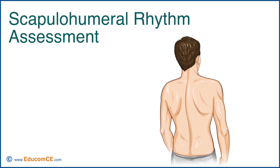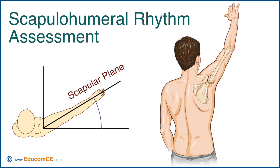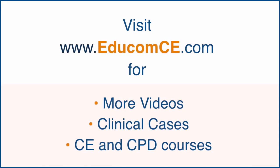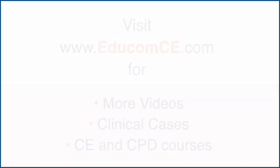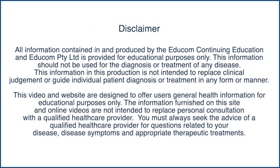To assess the scapulohumeral rhythm, the examiner observes from behind with the patient standing. The patient is asked to abduct the upper extremity in the scapular plane, which is approximately 30 degrees forward from the coronal plane. The examiner observes for the smooth and coordinated motion of the glenohumeral and scapulothoracic joints and compares this to the uninvolved side.